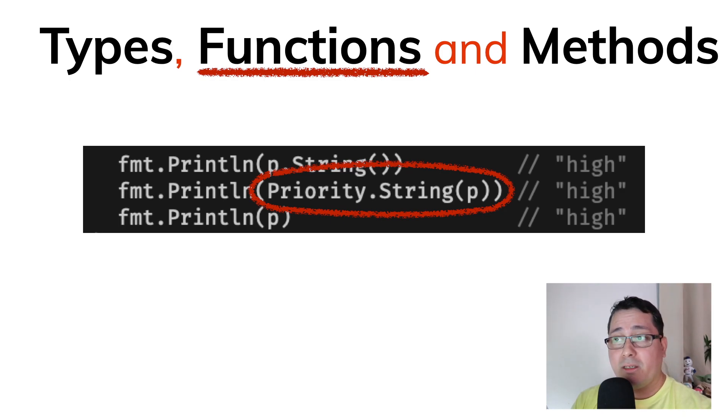As the first argument, the value of the type that is implementing that method. So that's why, above, you can see that p.string is actually doing the same as the thing that we are doing right here. It's calling priority.string and passing in the value of p.